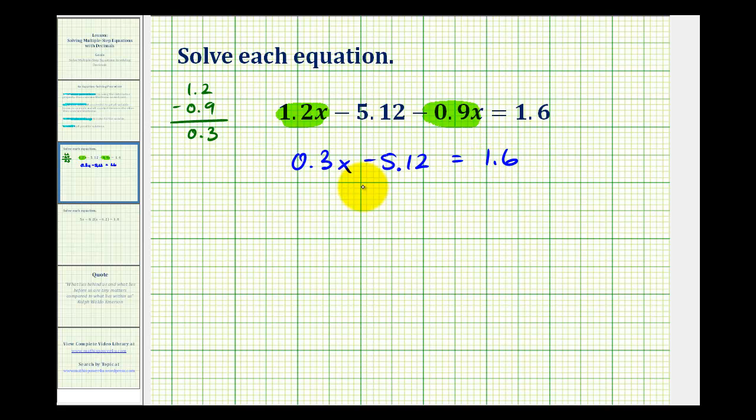So the next step is to add and subtract so that we have the variable terms on one side, and the constant terms on the other. Well we already have the variable term on the left side, so we don't want this minus 5.12 on the left side of the equation, so we'll perform the opposite operation to undo this, meaning we'll add 5.12 to both sides of the equation.